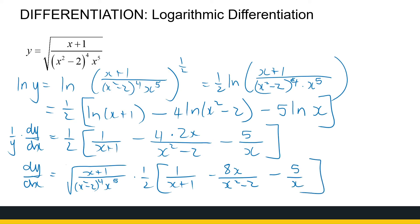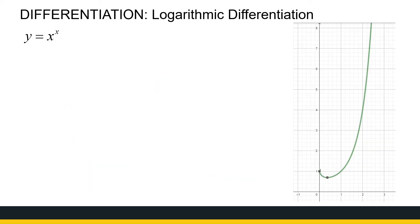There are times when logarithmic differentiation is the only approach available. Consider the function x to the power x. It looks like a power function and like an exponential function, but it's neither — the variable appears in both the base and the exponent. We have no standard differentiation rules that handle a variable in both positions. I've sketched the graph for x greater than zero: as x grows, x^x grows very fast, and between zero and one it behaves interestingly.